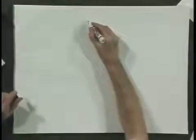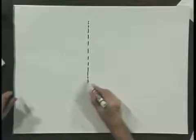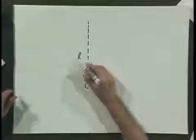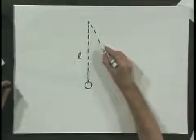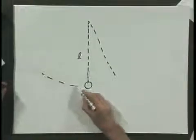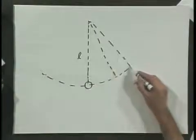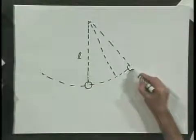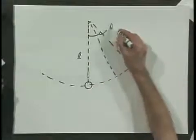Let's start again with a simple pendulum — a pendulum which has length L and the object has mass M. We are swinging it around, and this is the maximum possible angle, which I call theta maximum.